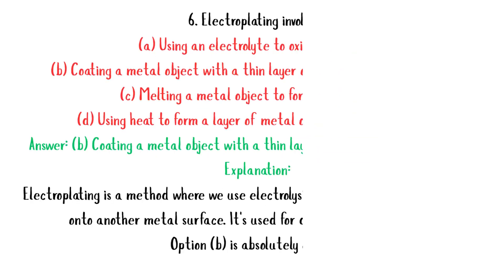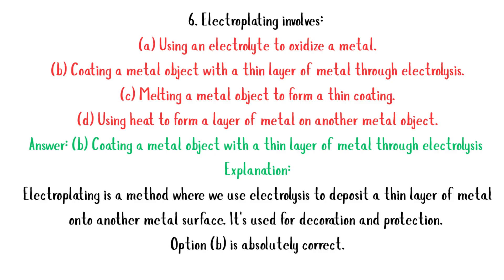MCQ 6: Electroplating involves — A. Using an electrolyte to oxidize a metal. B. Coating a metal object with a thin layer of metal through electrolysis. C. Melting a metal object to form a thin coating. D. Using heat to form a layer of metal on another metal object. Answer: B. Explanation: Electroplating is a method where we use electrolysis to deposit a thin layer of metal onto another metal surface. It's used for decoration and protection. Option B is absolutely correct.